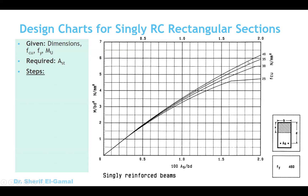So how do we use this chart? It is very easy. Usually you will be given the concrete compressive strength, the FY yield, the dimensions of the cross section B and D, and the M ultimate. This M ultimate is the applied moment at that cross section — it can be given directly or you can calculate it from the ultimate load using structural analysis. What is required is the area of the tension steel.